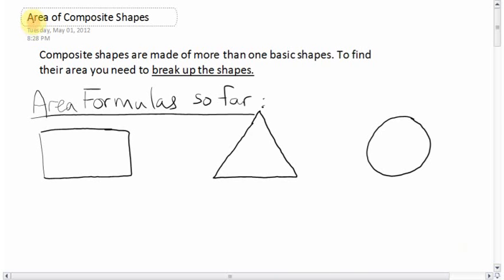Ok, so today's lesson is on the area of composite shapes. Composite shapes, or you can call them complex shapes, are made of more than one basic shape.